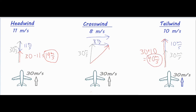Determining the direction depends on the terminology that the actual question uses. You might say 19 meters per second forward, or 19 meters per second north — it sort of depends on the wording of the question you're reading.